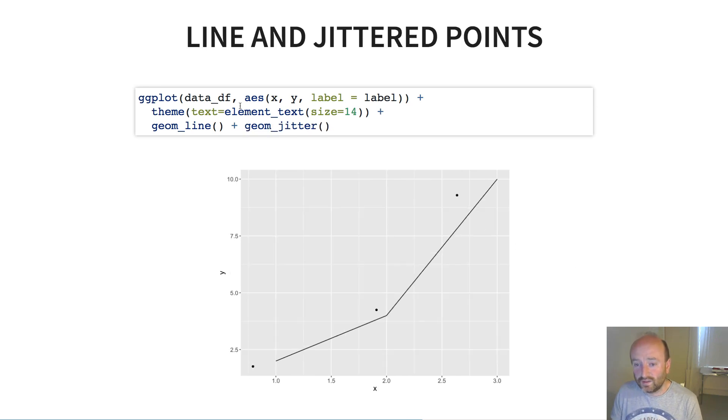There's also another geom, which is known as geom_jitter. And what that does is it effectively adds a random bit of x, y jitter to your point, which is particularly helpful when you're trying to visualize big datasets where a lot of the data may be on top of itself.